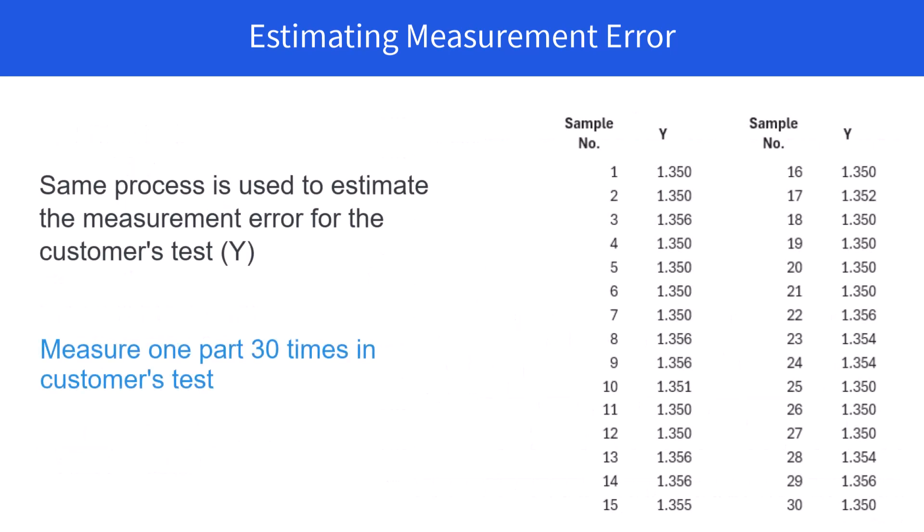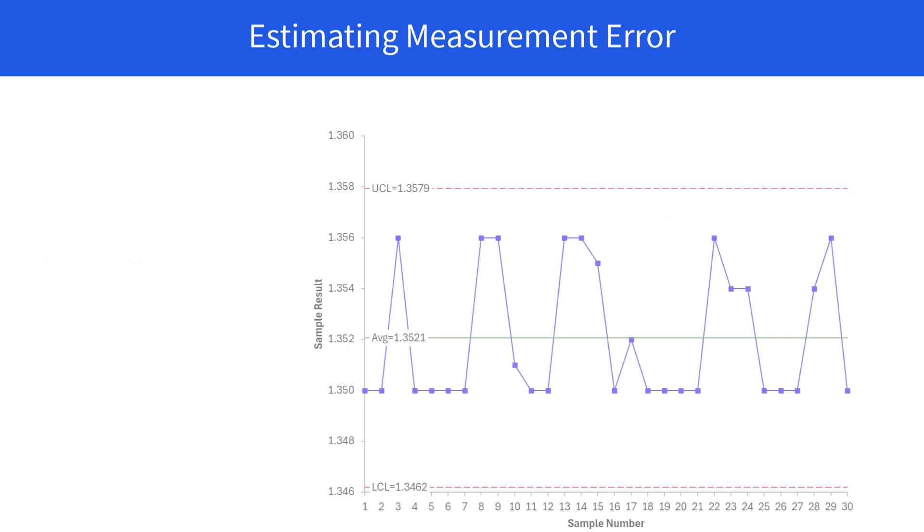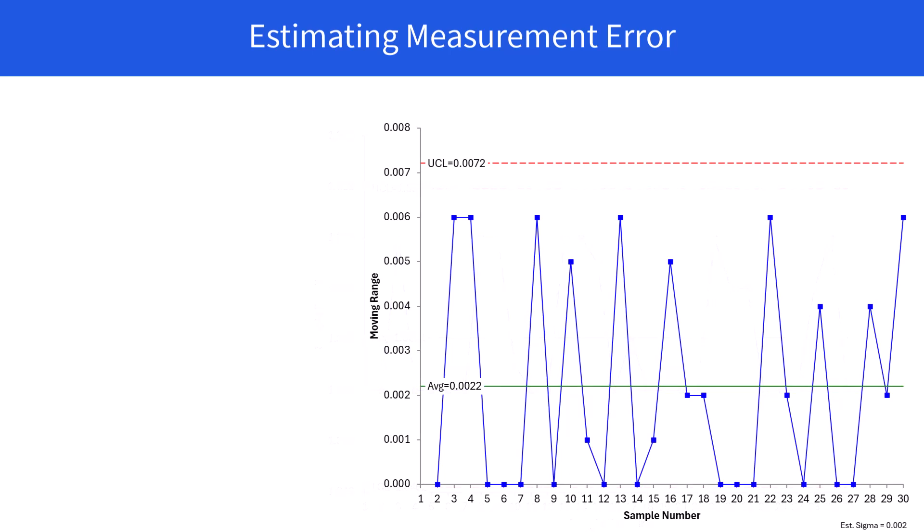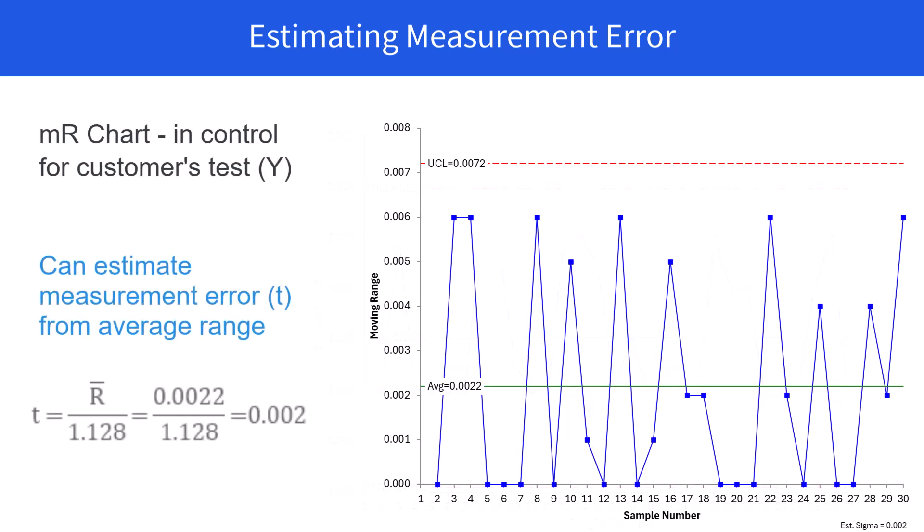Now you repeat this for the customer's test Y. One part 30 times. The data is shown here. Then you construct an X chart. It's in control for the customer's test, which is good. Then you're ready to make your moving range chart. It's also in control for the customer's test.